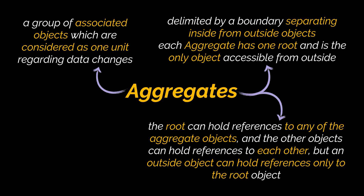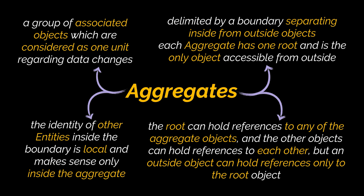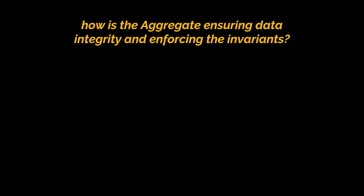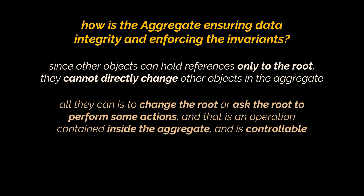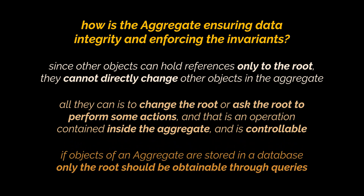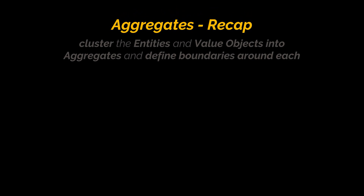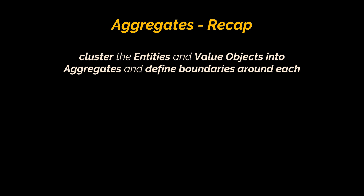Each aggregate has one root — the root is an entity and it is the only object accessible from outside. The root can hold references to any of the aggregate objects, and the other objects can hold references to each other, but an outside object can hold references only to the root. Since other objects can hold references only to the root, they cannot directly change other objects in the aggregate — all they can do is change the root or ask the root to perform actions. The root can then change the other objects, but that is an operation contained inside the aggregate and is controllable.